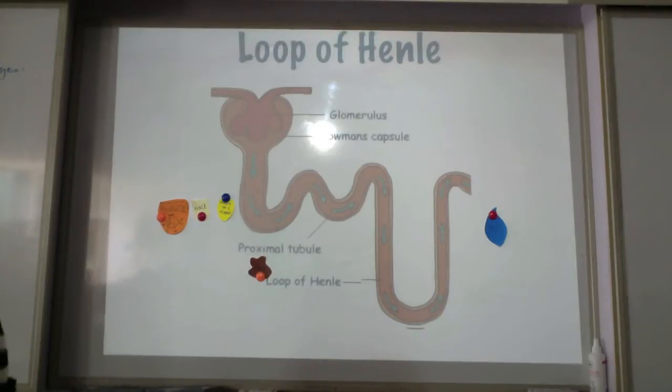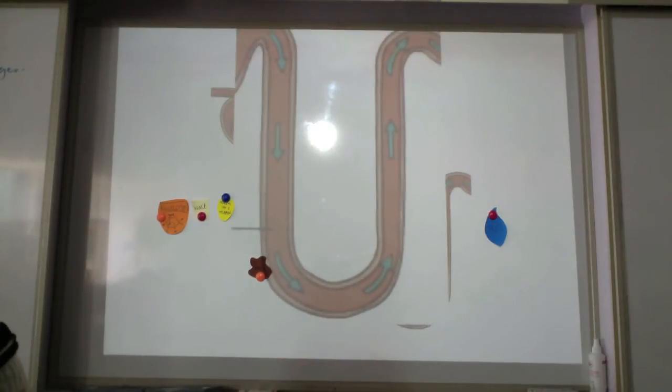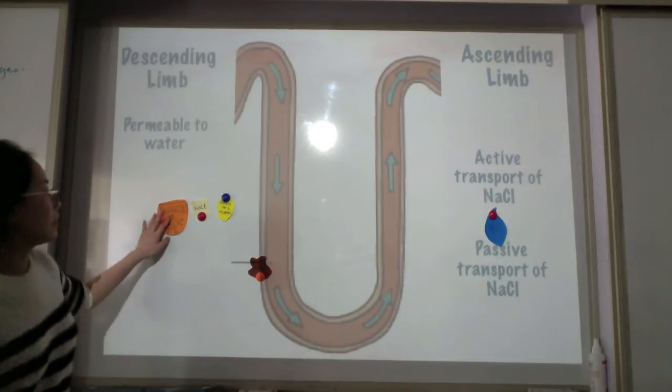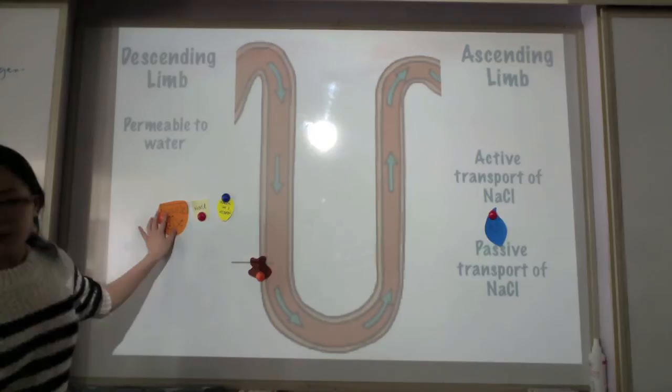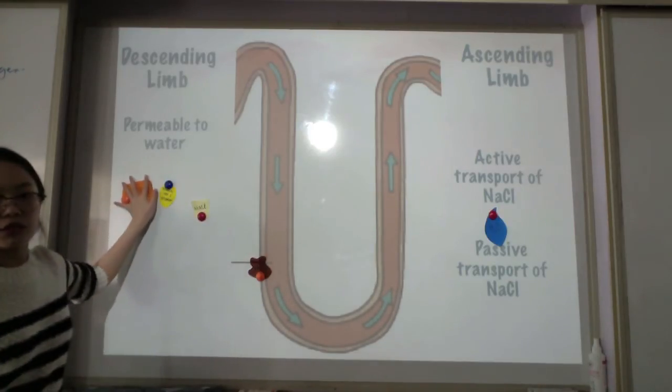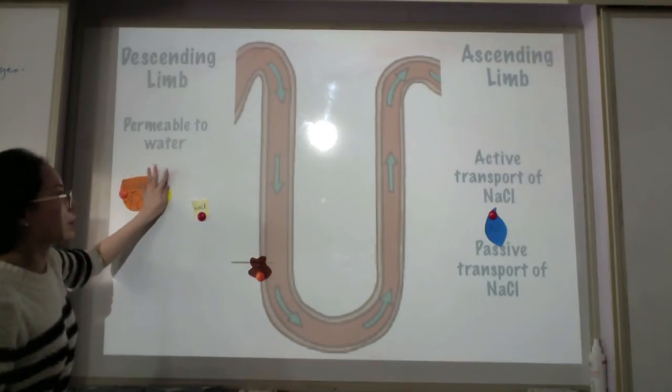And then moving to the loop of Henle. There's a loop of Henle and this is going to be the descending limb and the ascending limb. So first of all we know that the glucose and mineral ions are selectively absorbed to the medulla, I mean the cortex.